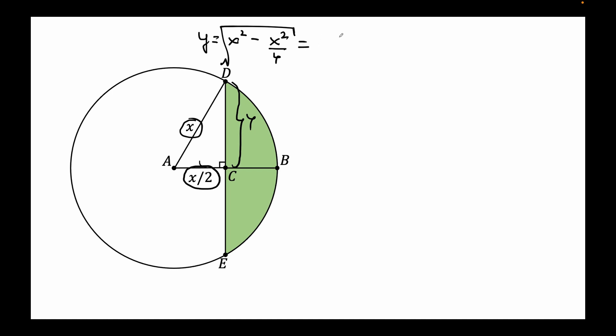And this equals, well that's 3 quarters of X squared, the root of that and this equals X and the root of 3 divided by 2. So this is Y. This is the side of the triangle.